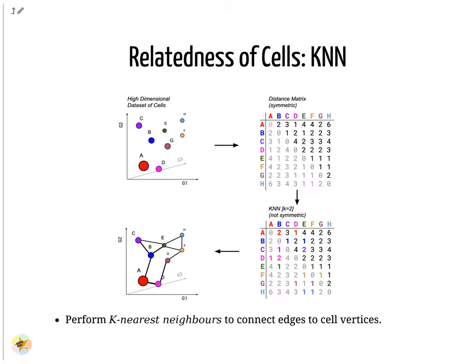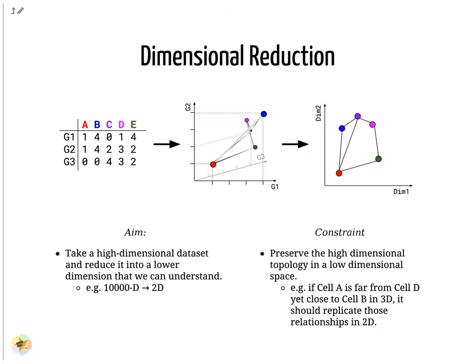Once a distance matrix is generated, we can perform K nearest neighbors upon it, where directed edges are generated between cells. For each row of the distance matrix, K of the cells with the smallest distance values are selected, representing the nearest neighbors. If the edges are mutually shared between neighboring cells, then this is called a shared nearest neighbor approach. We can represent this three-dimensional space easily as three independent axes with points that denote the cells. Extrapolating this to a real dataset with thousands of dimensions is beyond the scope of human possibility. Dimensional reduction is a technique that takes a high-dimensional dataset and produces a low-dimensional representation, usually two-dimensional, that tries to preserve the distances between the data points.